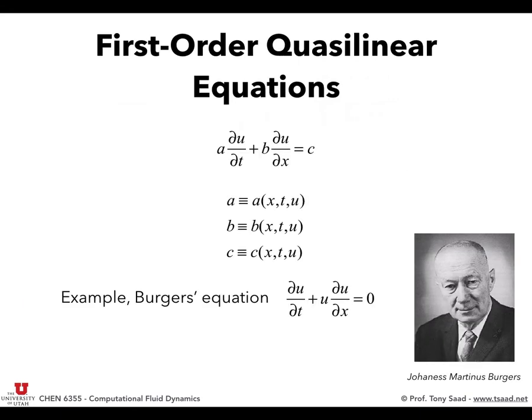For the remainder of these lectures, we will be dealing with first-order quasi-linear equations of the form a du/dt plus b du/dx. A classic example is Burgers' equation: du/dt plus u du/dx. It's like an advection equation, except the advecting velocity is a function of the dependent variable. Please don't write this as 'Burger's' — his last name is Burgers, with an s. This is Burgers' equation.